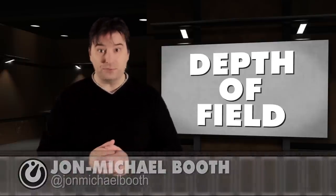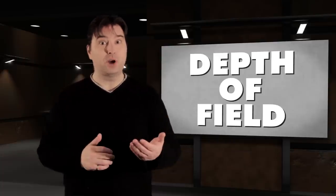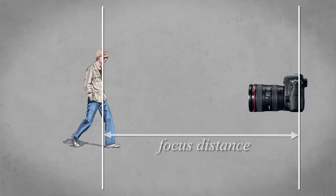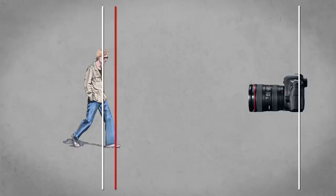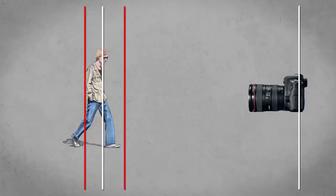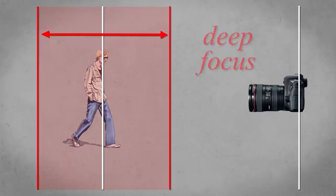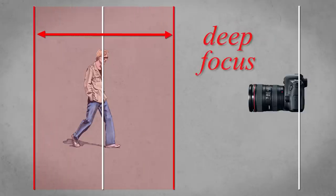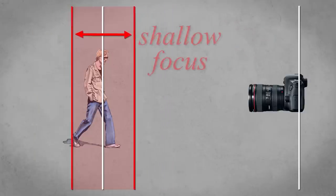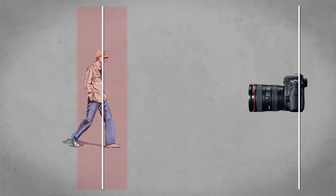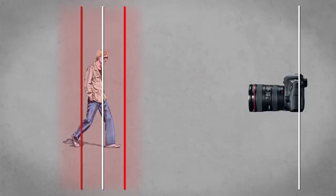Depth of field refers to the range between the closest element in focus and the farthest element in focus. A large depth of field is called deep focus, and a small depth of field is called shallow focus. The edges of this range fall off gradually, so the range in the diagram represents the scene elements that are acceptably sharp.